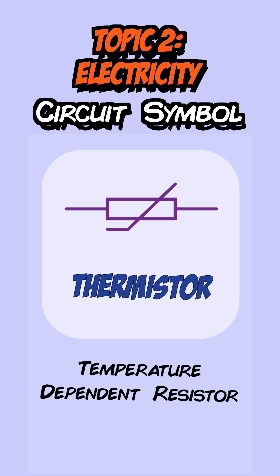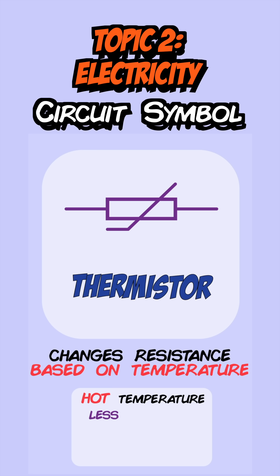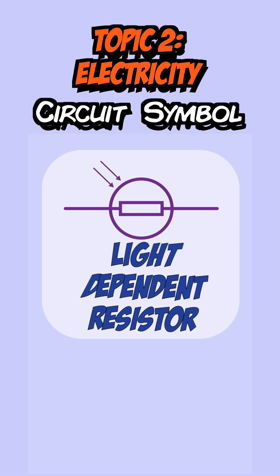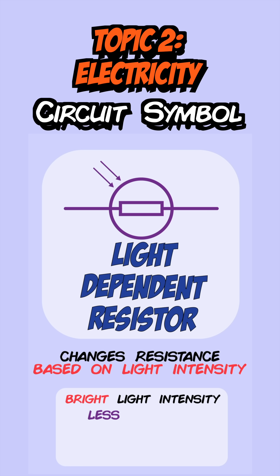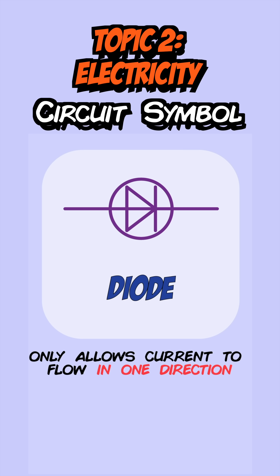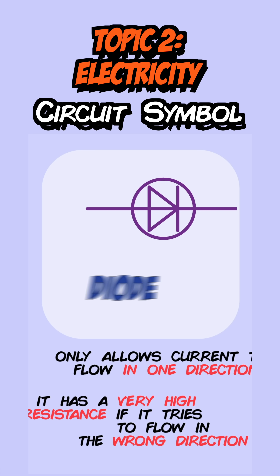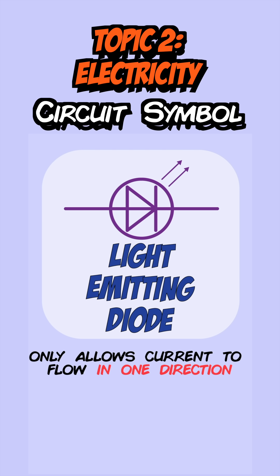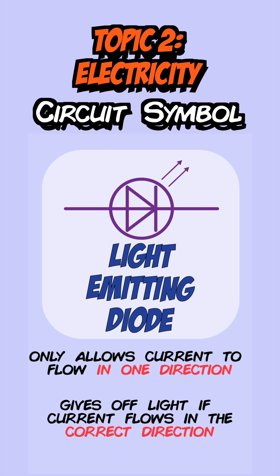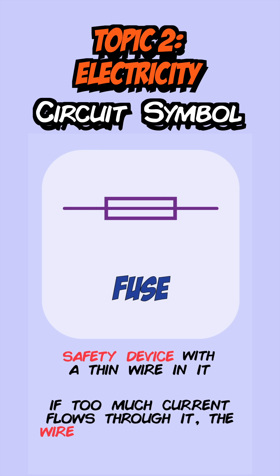Thermistors are temperature-dependent resistors that change the resistance based on the temperature of the surroundings — on a hot day the resistance is low, and on a cold day it's high. Similarly, light-dependent resistors work the same but depend on light intensity: in a bright room the resistance is low, and in a dark room it's very high. Diodes are devices that only allow current to flow in one direction — if connected the wrong way, they have a very high resistance which prevents current from flowing. LEDs, or light-emitting diodes, also only allow current in one direction and give off light when current flows in the correct direction. Finally, a fuse is a safety device with a tiny wire — if too much current flows through it, the wire melts and breaks the circuit, preventing electrocution when there's a fault in a device.